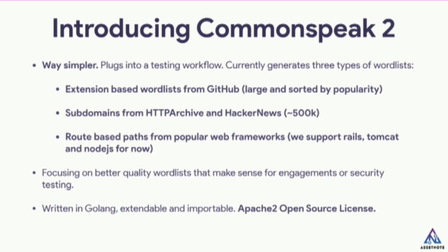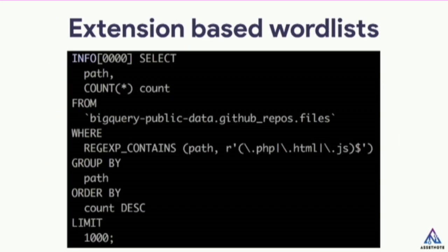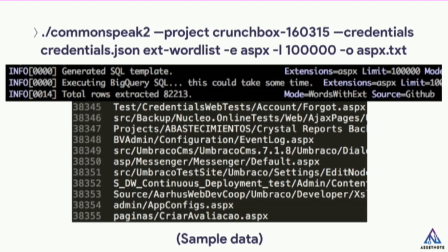This is the extension-based word list module — a simple query pulling from GitHub. It's pulling out different files with different extensions. In CommonSpeak 2, the command takes your Google project ID and credentials, and generates an extension word list — for example, with ASPX — getting a hundred thousand results and piping it out to aspx.txt.